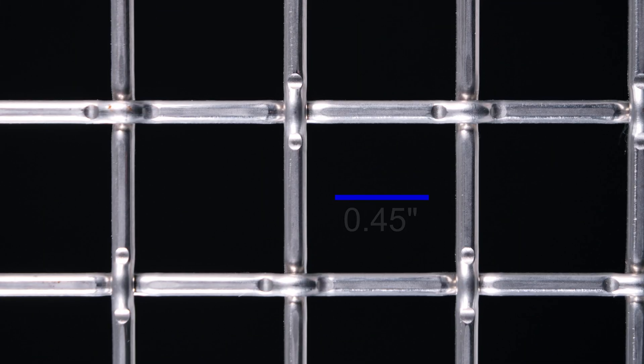Aperture size is the center distance between the inside of two parallel wires. It could be between two warp wires like this or two weft wires like this. Either way, it's all about determining the size and shape of the opening. Pretty important, right?